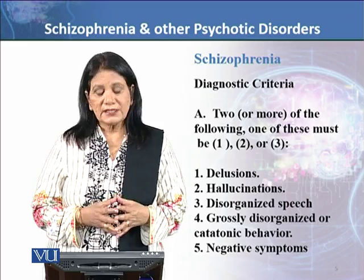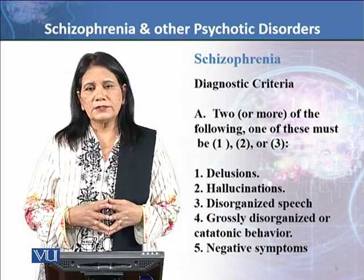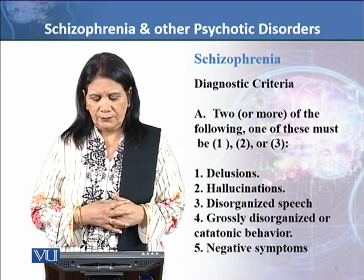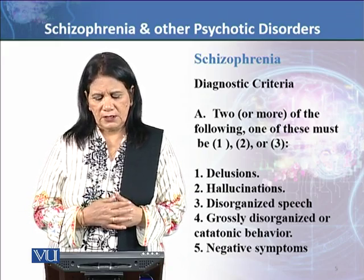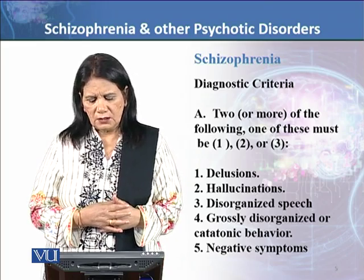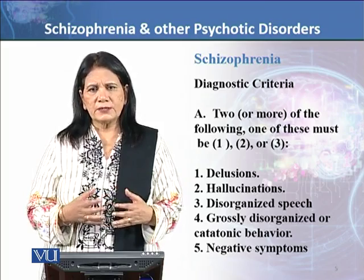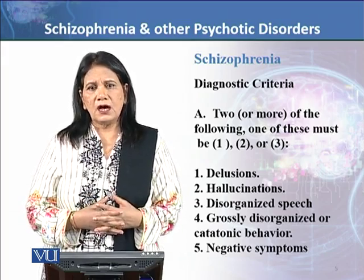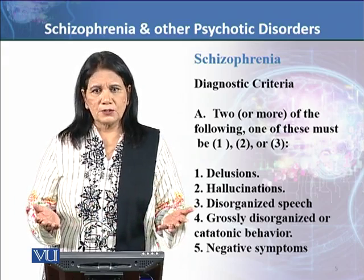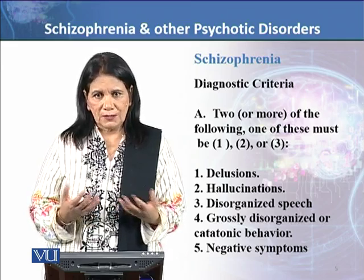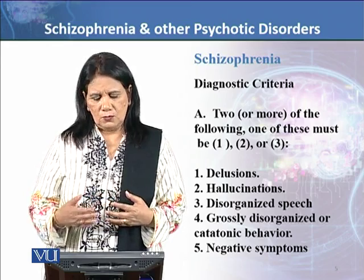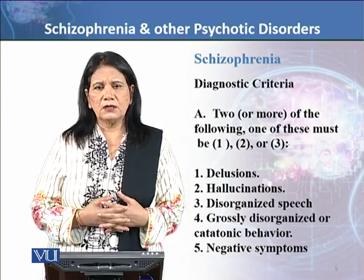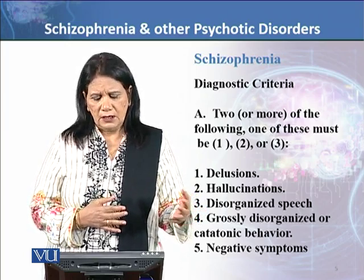Catatonic and grossly disorganized behavior means a departure from normal functioning. Grossly disorganized behavior includes impaired self-grooming and daily functioning activities. Catatonia is a behavior where the patient adopts a particular posture and remains in it for hours — for example, standing or sitting in a fixed position where parts of the body remain rigid and do not change. Negative symptoms, as mentioned, are the deficits in daily life behavior.